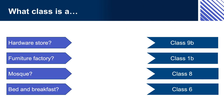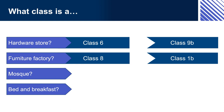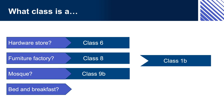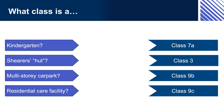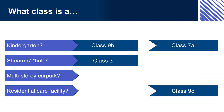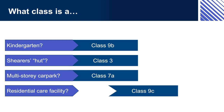What class is a hardware store? Class 6. Furniture factory? Class 8. Mosque? Class 9B. Bed and breakfast? Class 1B. What class is a kindergarten? Class 9B. Shearer's hut? Class 3. Multi-storey car park? Class 7A. Residential care facility? Class 9C.